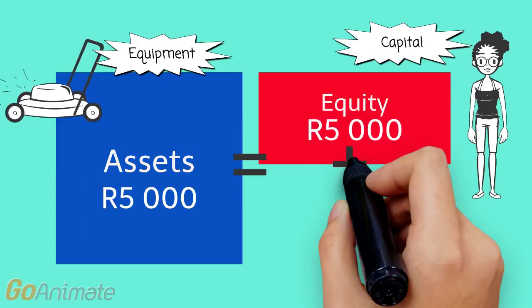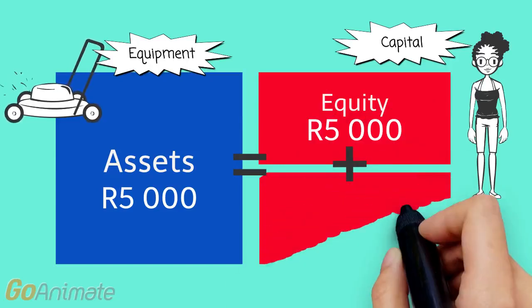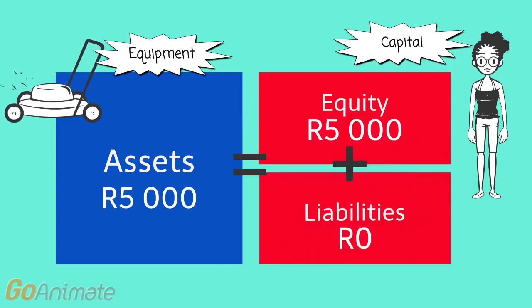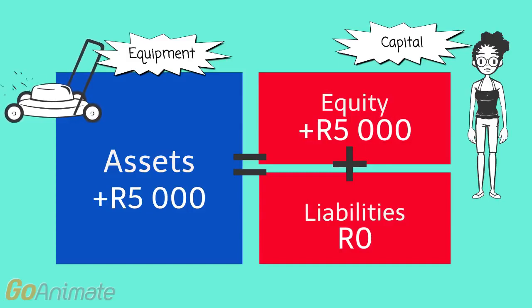Liabilities are zero. So the blue block — assets — is 5,000, the red block equity is 5,000, and the two blocks are equal. We say that the assets of the business called equipment increased by 5,000, and the capital of the business — that's part of equity — increased by 5,000.